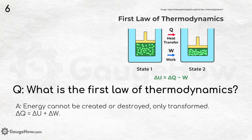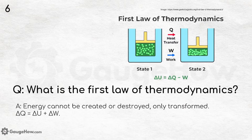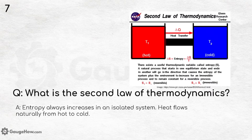What is the first law of thermodynamics? It states that energy cannot be created or destroyed, but only transformed. The formula is: delta Q equals delta U plus delta W, where delta Q is the heat transferred, delta W is the work done, and delta U is the change in internal energy of the system. What is the second law of thermodynamics? Entropy always increases in an isolated system, and heat flows naturally from hot to cold regions.